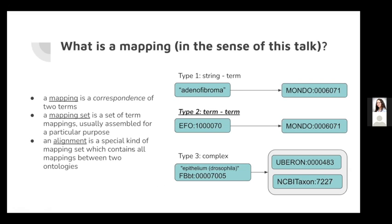A 'mapping set,' a word I will use a lot, is just a set of term mappings, usually assembled for some particular purpose. And an 'alignment,' in the sense of Ernesto's talk, is a special kind of mapping set which contains all mappings between two or more ontologies.